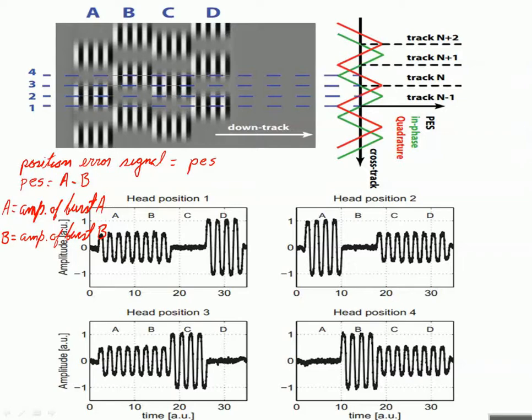Besides PES given by A and B, as I explained before, we have the other signal C minus D, which is as important as PES. Let's see why.